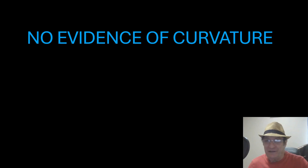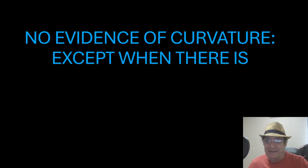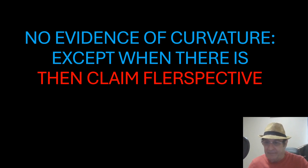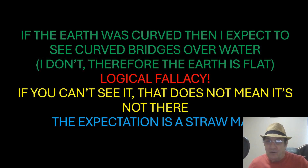Now there is no evidence of curvature — except when there is. And of course, when there is, there will be all kinds of excuses from the flatties, one of which is 'fluspective,' because perspective cannot make anything curved. So they have to make up some properties of perspective that don't exist. We've been confronted with: if the Earth was curved, then I expect to see curved bridges over water, and I don't see that — therefore the Earth is flat.